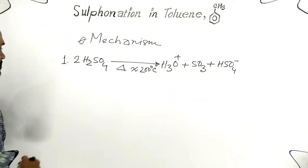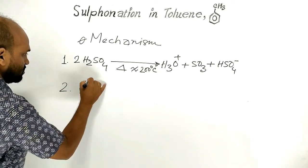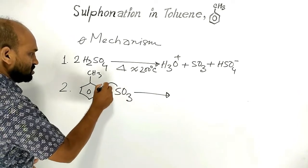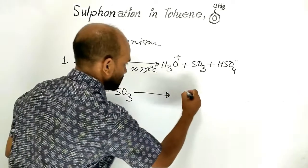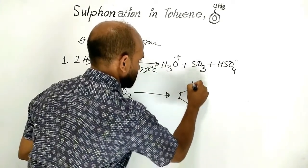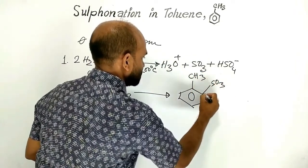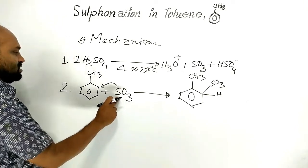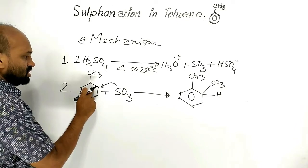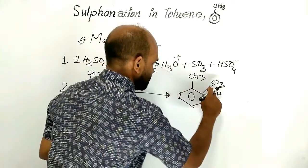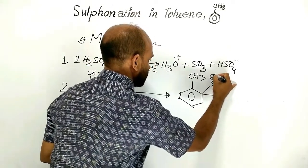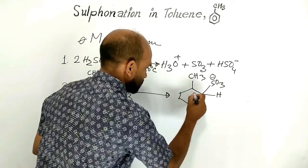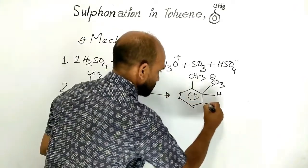Step 2: the sulfur trioxide electrophile attacks toluene. The phenyl group donates electrons to sulfur trioxide, causing a negative charge to develop over sulfur. Because the phenyl group acts as an electron donor, a positive charge develops on the ring carbon, forming what is called a sigma complex.